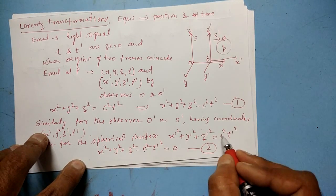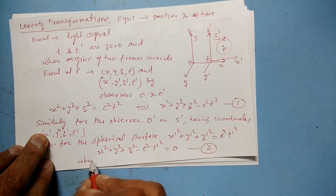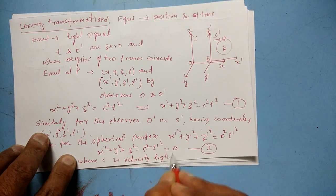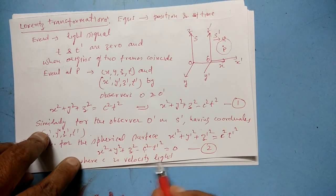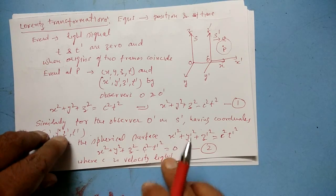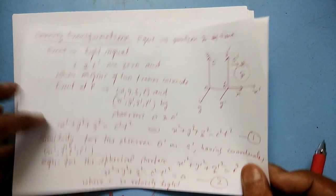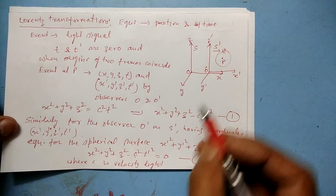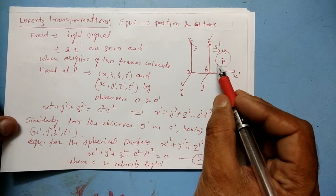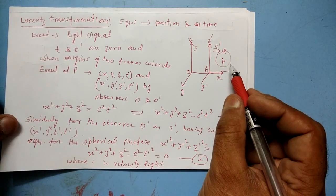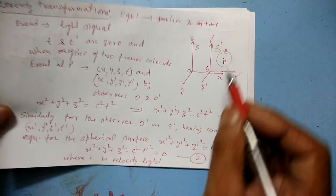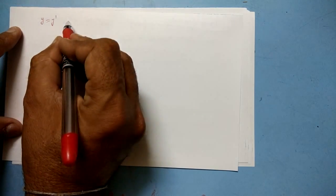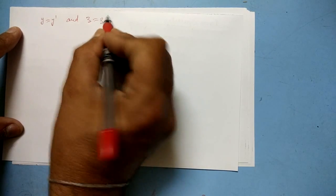Here c is the velocity of light, and we know that c is constant for all inertial frames. As S dash is moving along the x direction, from the symmetry point of view we can write y equals y dash and z equals z dash.